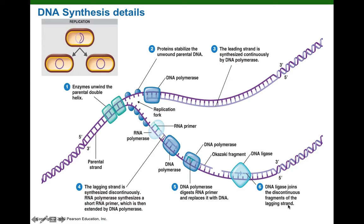This is going to be DNA replication, DNA synthesis, part two. In the first part we went over the big view, and now we're going to look at the E. coli chromosome at the replication fork and discuss all the proteins and enzymes that are involved in replicating, making a copy of the chromosome.